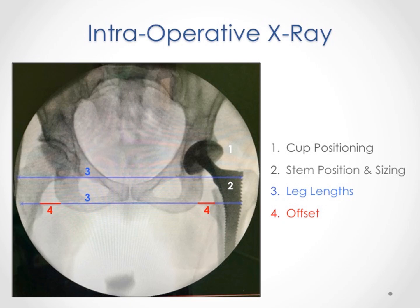Then the stem is checked to ensure proper sizing and alignment. The leg lengths are checked using the same method employed during the preoperative determination of leg lengths. However, this time we are looking and comparing two lines: the teardrop line and a line drawn across the lesser trochanters. In this radiograph, the teardrop line is the top blue line labeled 3, the lesser trochanter line is the bottom blue line labeled 3, and we can see they are perfectly parallel, indicating that we have corrected the initial 5mm discrepancy. The offset measured by the distance between the top of the lesser trochanter and the pelvis is then checked, and the goal is to have the same offset in both hips.